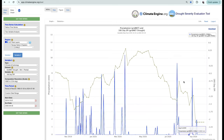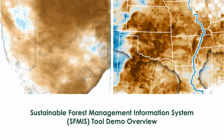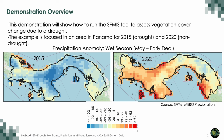Now I will pass the proceedings over to Erica. Hello everyone, this is Erica and I am an instructor with the RCET program and a scientist at NASA's Jet Propulsion Laboratory. The next demo will be focused on the use of a tool known as the Sustainable Forest Management Information System or SFMIS, which generates land cover classifications. In this case, we will generate land cover classifications during and after a drought to assess the impact on land cover. This tool was developed through a NASA ROSES Ecological Forecasting Grant.